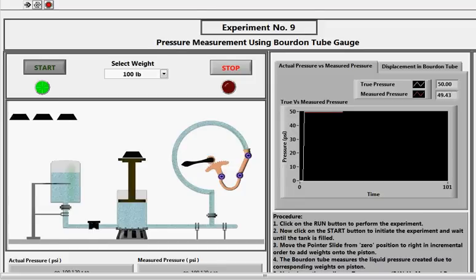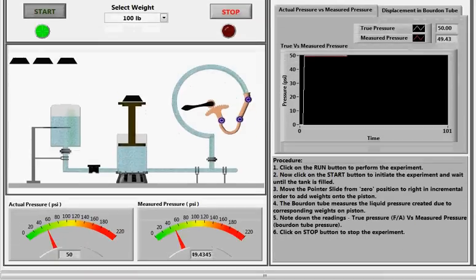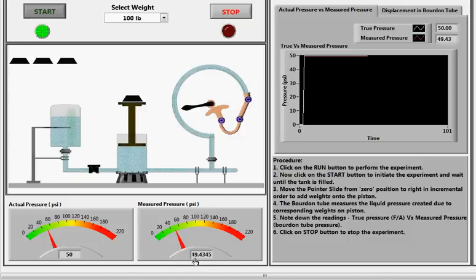Now note down the corresponding reading of pressure through the indicator of pressure applied. As you can see, the actual pressure is 50 and the measured pressure computes to 49.4.